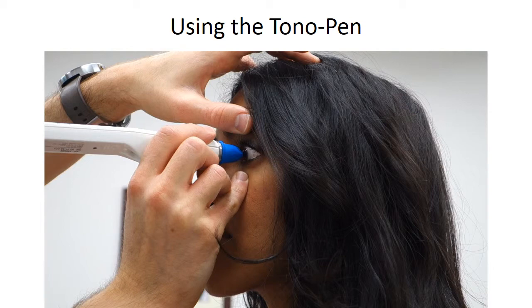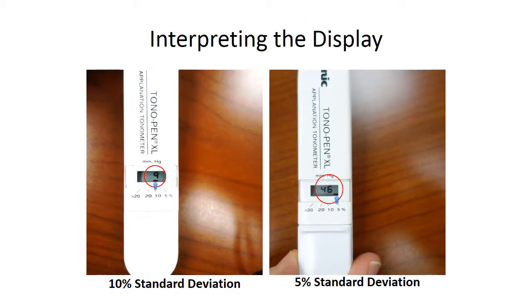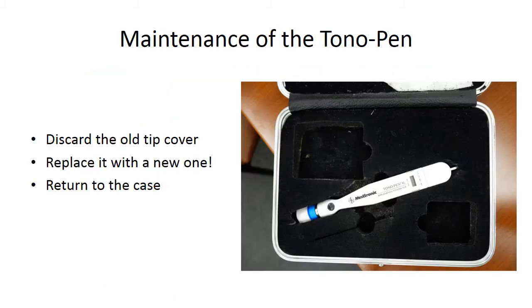A chirp will sound every time a valid reading is obtained. After several readings, a final beep will sound and the averaged IOP measurement will appear on the display. A single IOP number will be shown — this is the average. In addition, a horizontal bar will appear above one of four numbers below the readout, indicating the statistical reliability of the average measurement. If the bar appears above the number 10, the standard deviation is 10% or less of the number shown. If the display indicates a standard deviation greater than 5, you may want to repeat the measurement. Do the same for the other eye. When finished, throw out the used tip cover and replace it with a new one before returning the tono pen to its case.